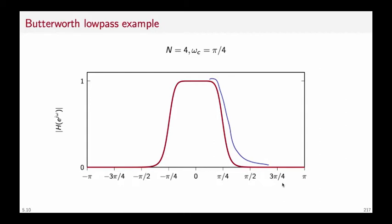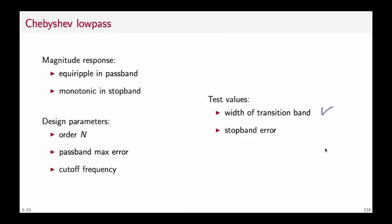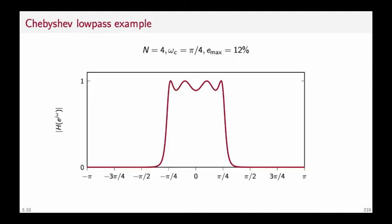The Chebyshev low-pass has a magnitude response which is equi-ripple in the pass-band and monotonic in the stop-band. The design parameters are the order, the pass-band maximum error, and the cut-off frequency — one extra parameter compared to the Butterworth. We run the algorithm and check the result against the specs with respect to the width of the transition band and the stop-band error. The frequency response of a Chebyshev filter of order 4 with cut-off frequency pi over 4 and a maximum pass-band error of 12% gives 0.12 amplitude ripple. Compared to the Butterworth filter, we have a steeper transition band — the reward for accepting an equi-ripple error in the pass-band.